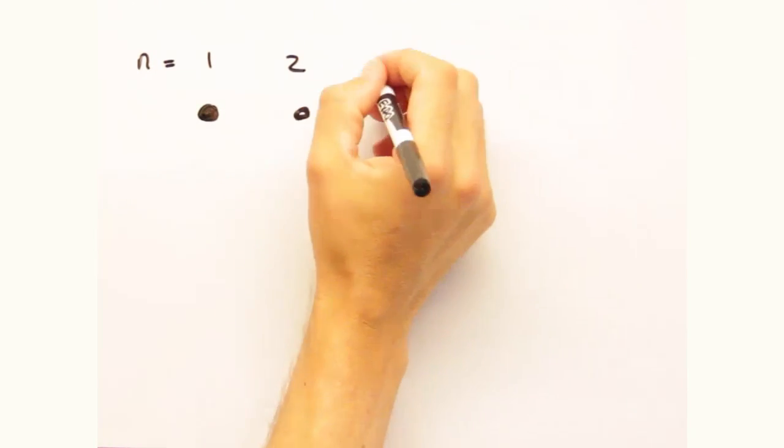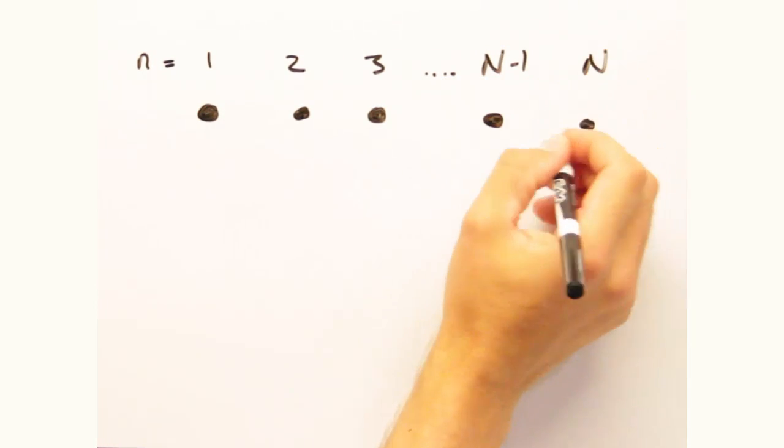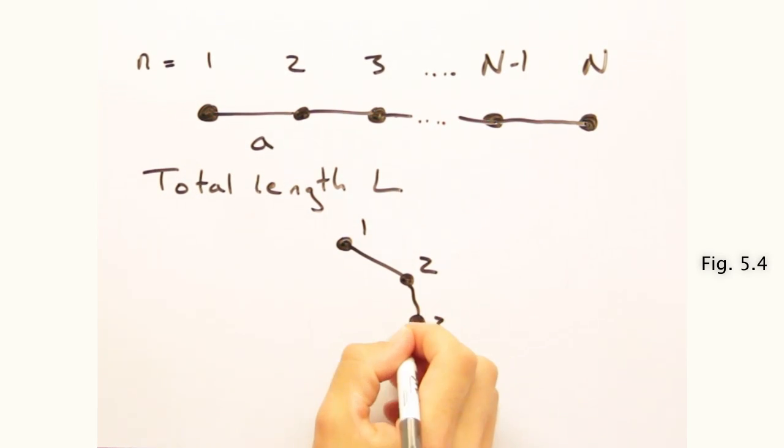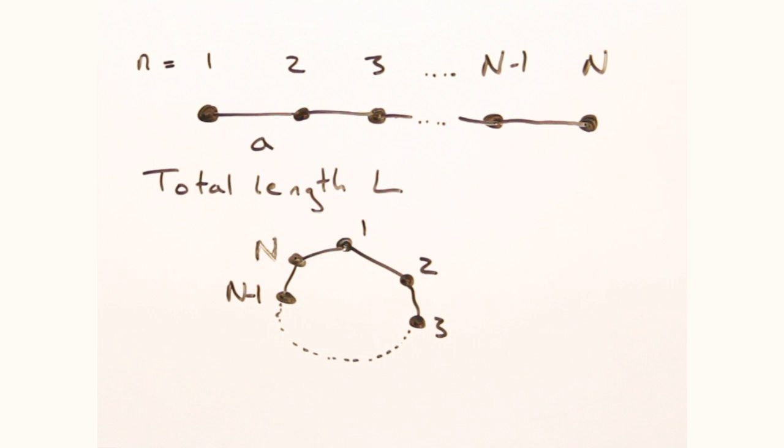That's quite a bit to cover. Let's start with our standard 1D chain that has N number of cells of length A and total length L, and bend it into a ring. Now we don't have any exposed surfaces.